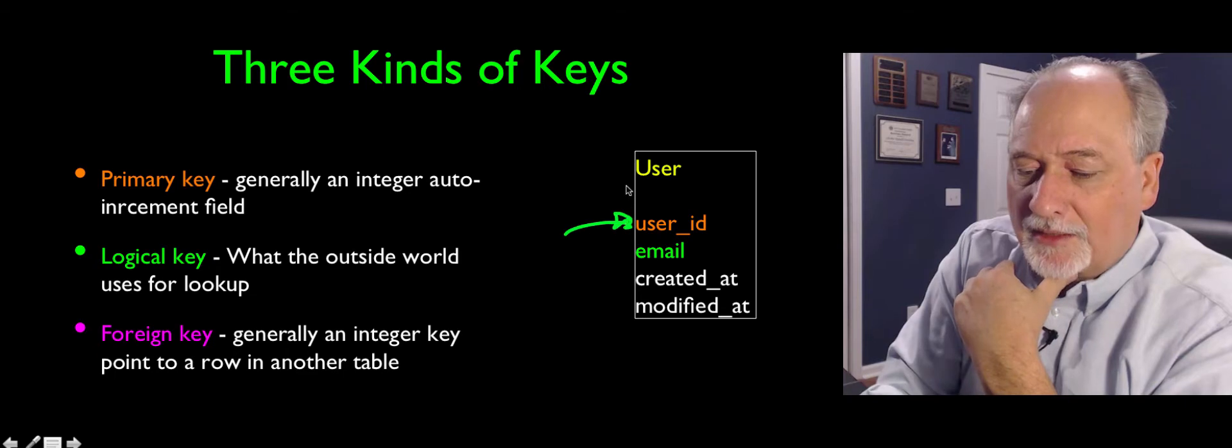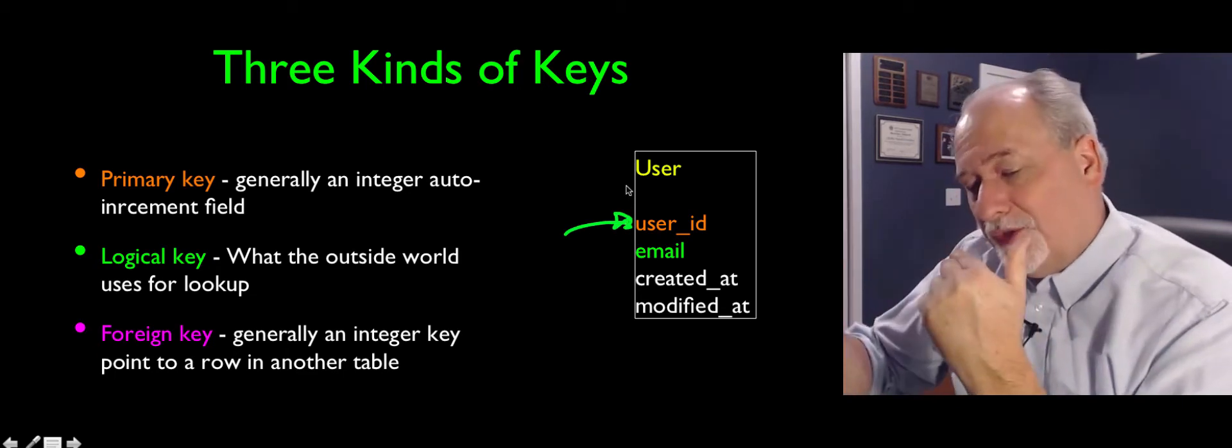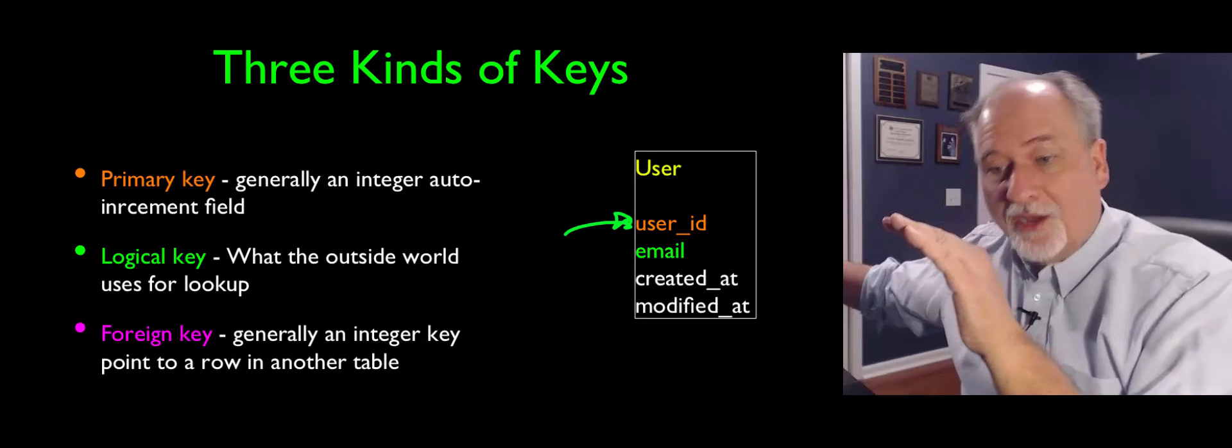And that's the key we add to the table to generate this little number. So we call that the primary key of the entire row.